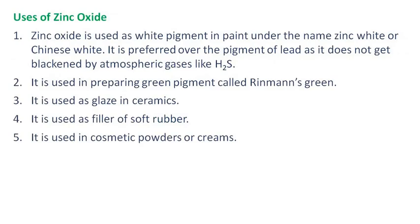Uses of zinc oxide: Zinc oxide is used as a white pigment in paint under the name zinc white or Chinese white. It is preferred over lead pigment as it does not get blackened by atmospheric gases like hydrogen sulfide. It is also used in preparing a green pigment called Rinman's green.